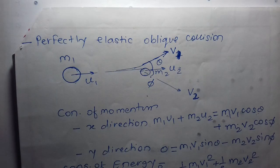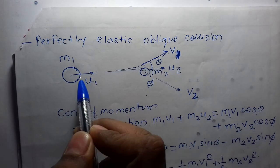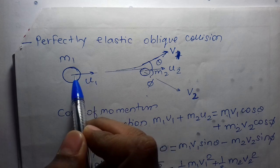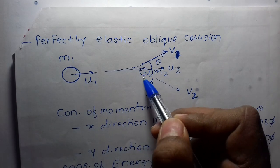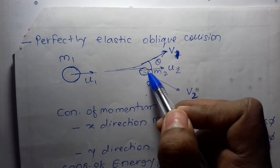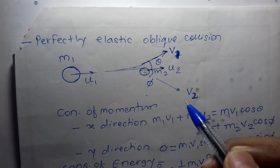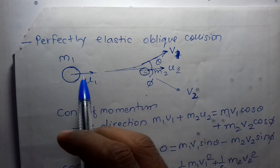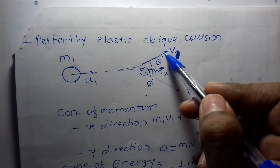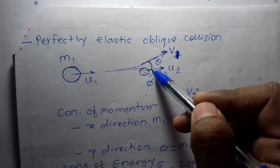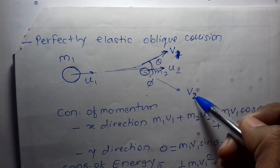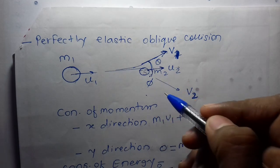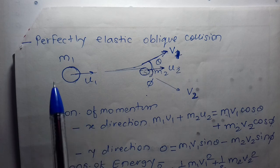In a perfectly elastic oblique collision, mass m1 having velocity u1 is coming from the left-hand side. Second mass m2 is moving along a line with velocity u2. After the collision, the first mass goes in a direction with velocity v1 and angle theta, and the second mass goes in a direction with velocity v2 and angle phi.